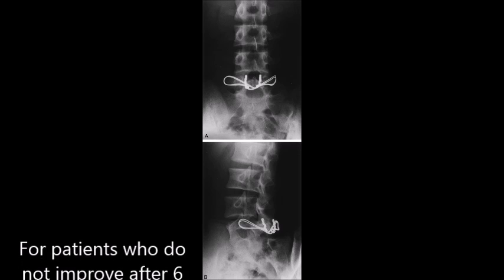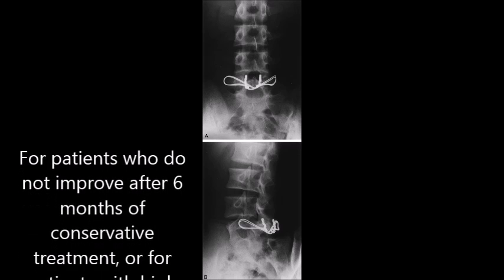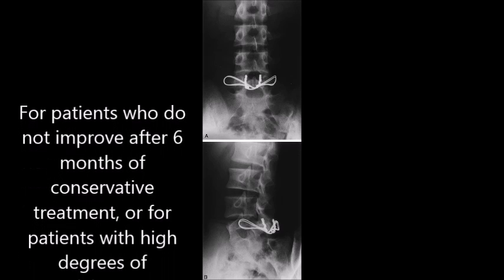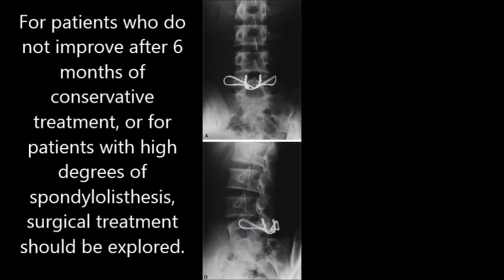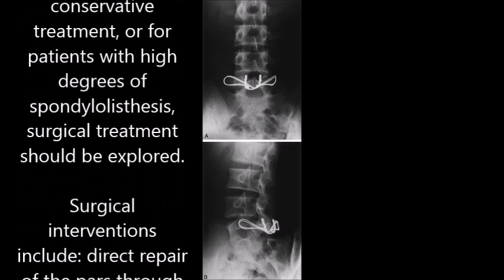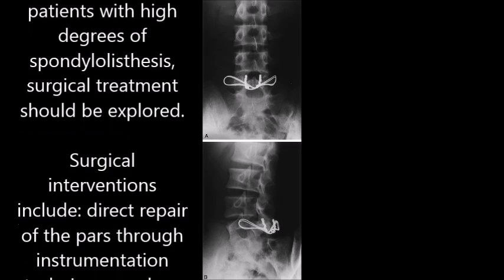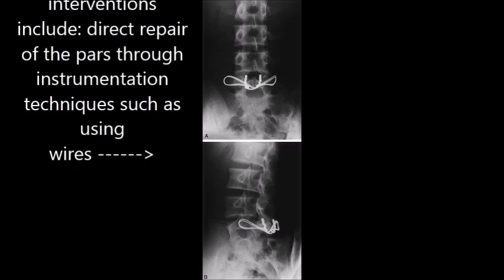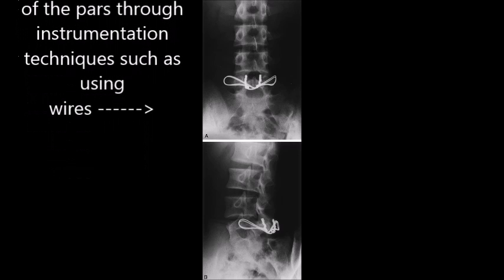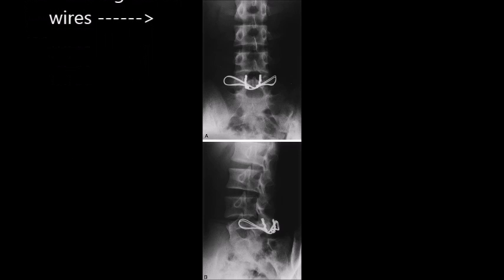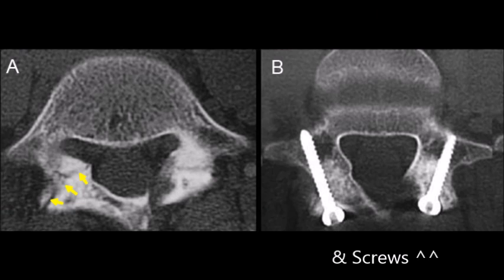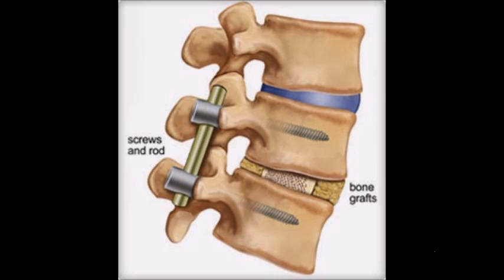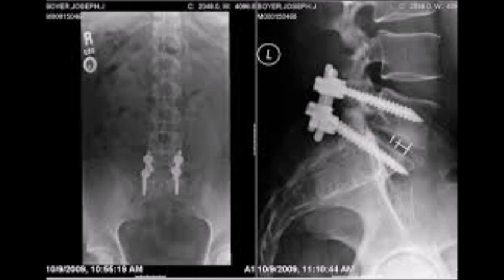For patients who do not improve after 6 months of conservative treatment, or for patients with high degrees of spondylolisthesis, surgical treatments should be explored. Surgical interventions include direct repair of the pars through instrumentation techniques such as using wires, hooks, and screws, or a fusion, usually of L5 to S1, through a posterior iliac crest bone graft.